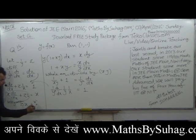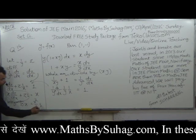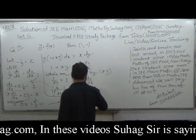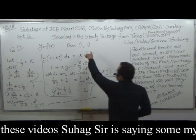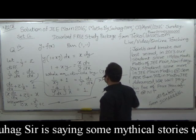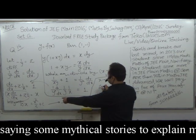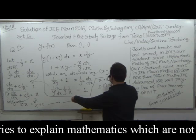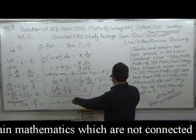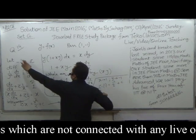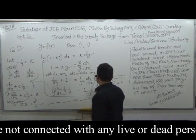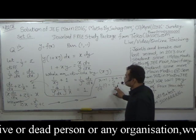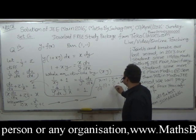तो सामने वाला हो गया x²/2 + C. हमसे कहा था कि x = 1 रखने पर y = -1 रख देना है, तो z·x की value — x की value 1, सामने (-1)²/2 + C. और z क्या है — minus 1/y. तो z की जगह -1/y, y की value -1.